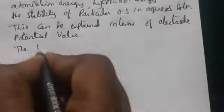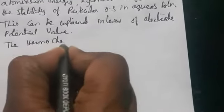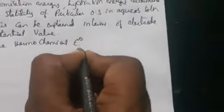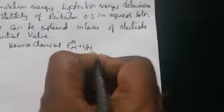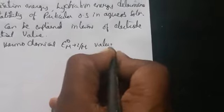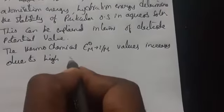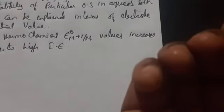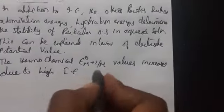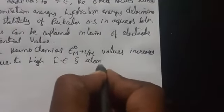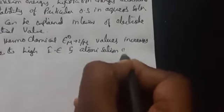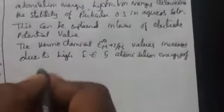The standard electrode potential values of transition elements increase due to the increase in the sum of first and second ionization energies. The thermochemical standard electrode potential values increase due to high ionization energy and high atomization energy of transition elements.